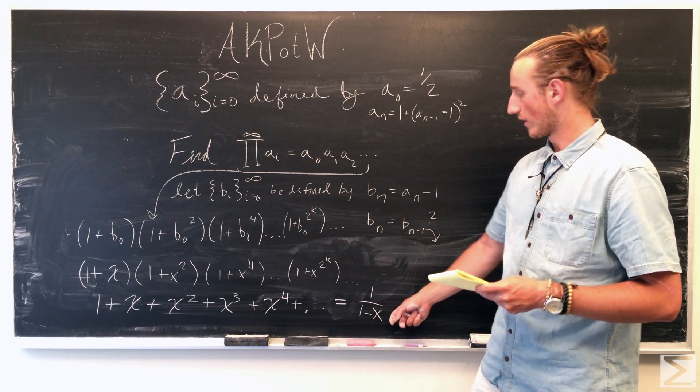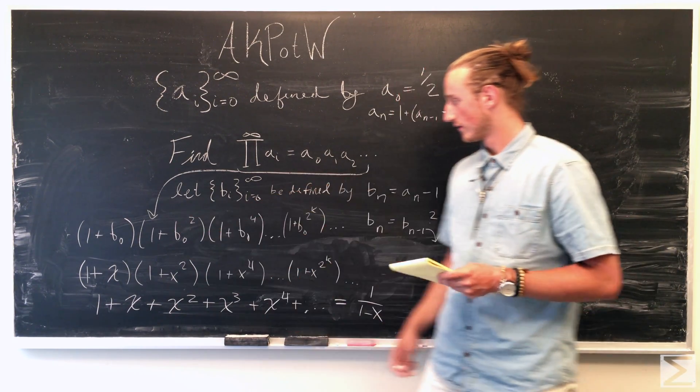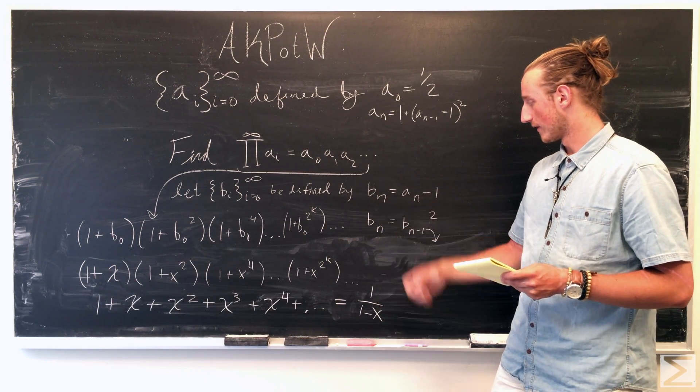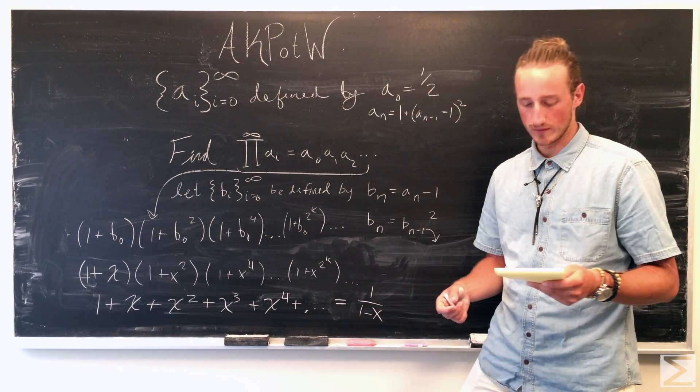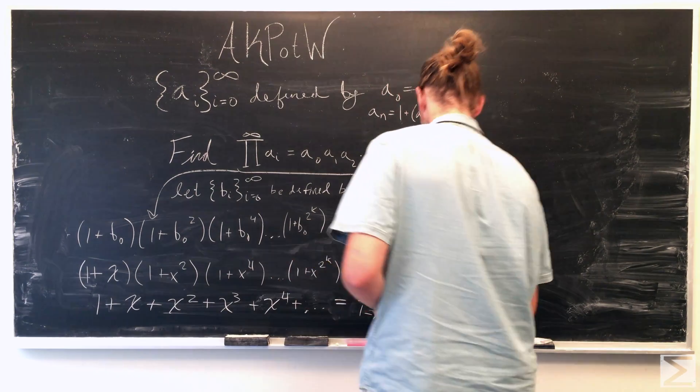So, or our x is b naught. Sorry about that, b naught, it's just going to be a of n minus one. So plugging that in we can find out what this converges to.